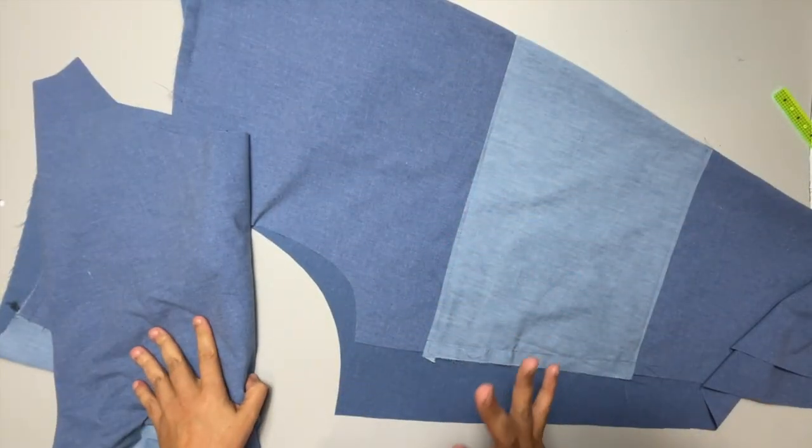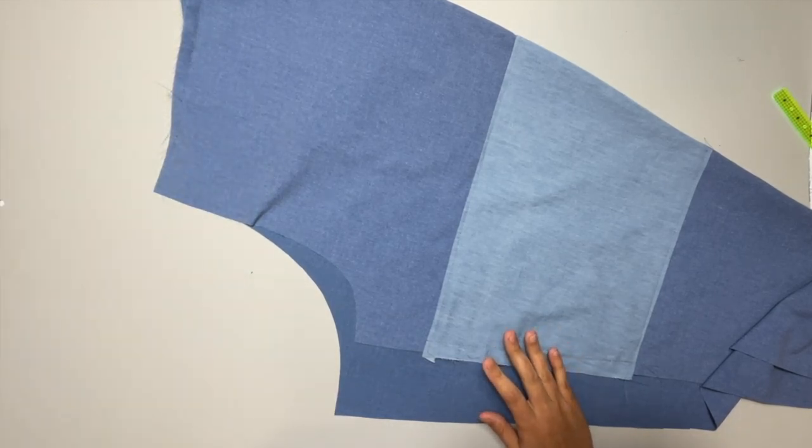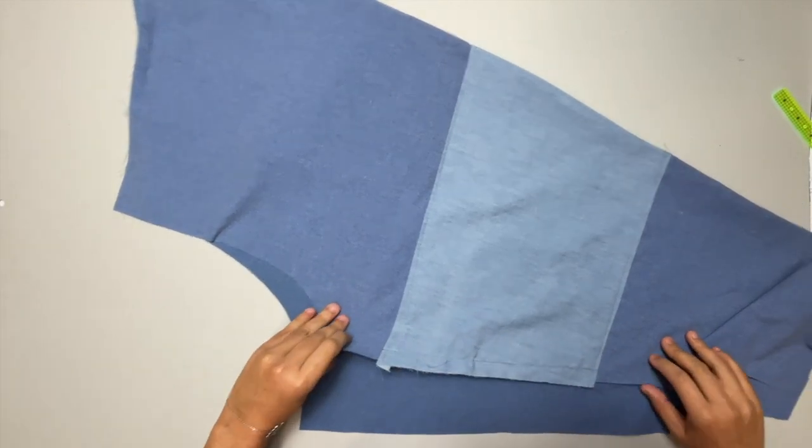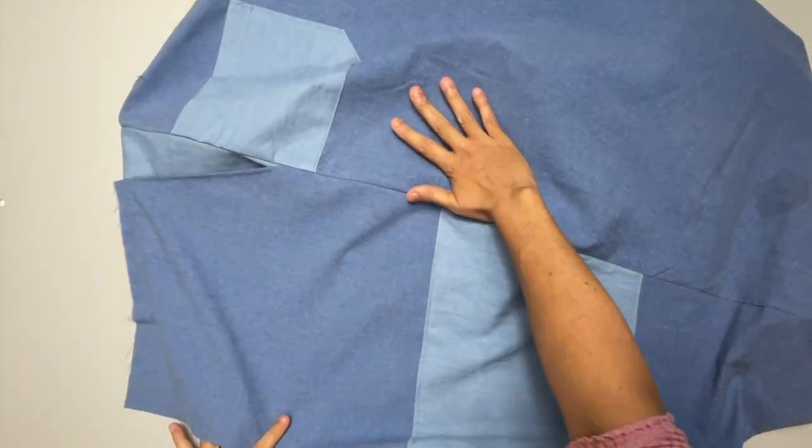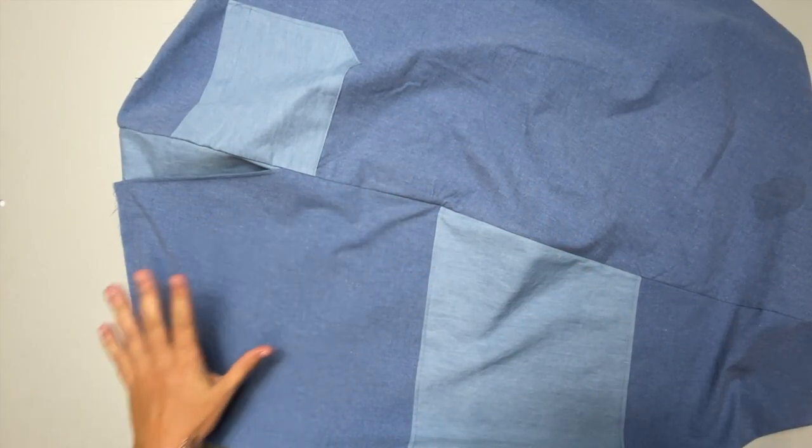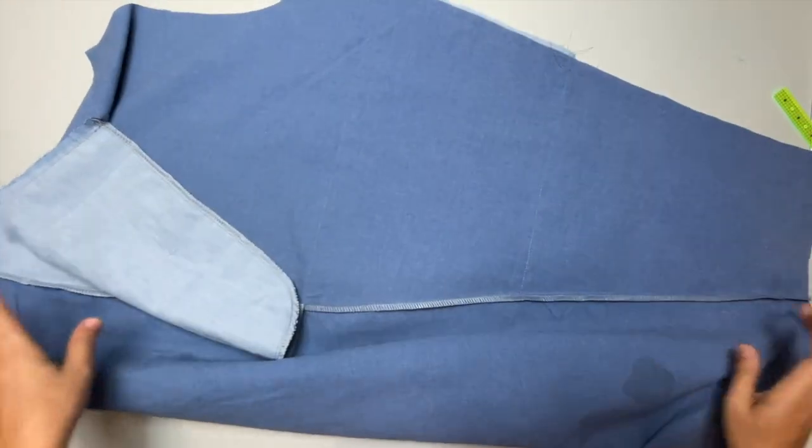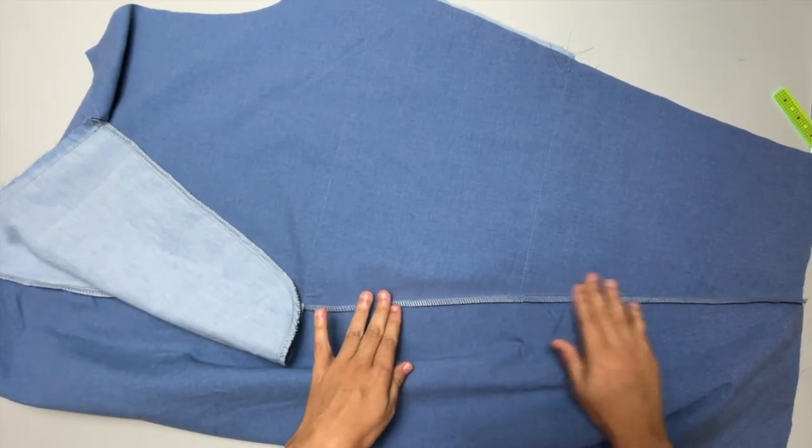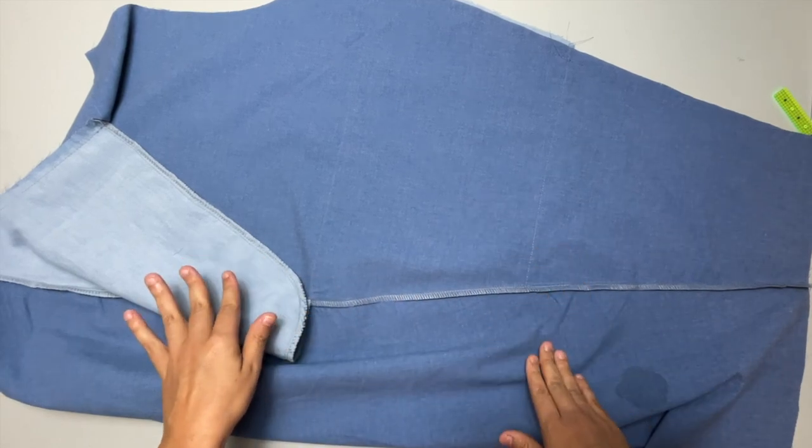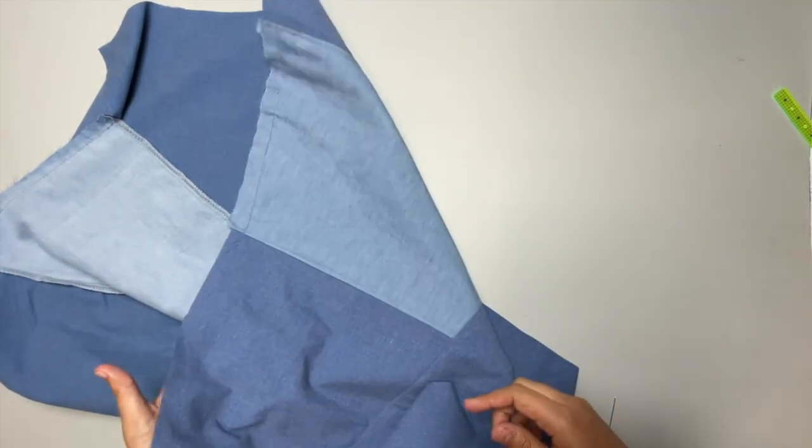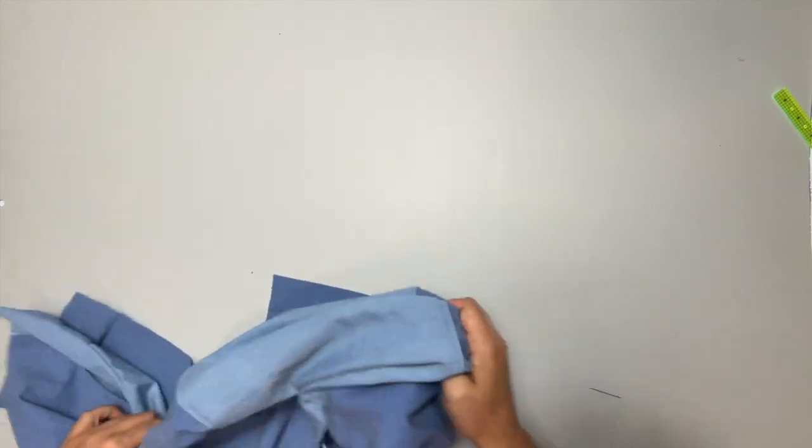All right, so let's attach this cargo pocket. We've got to prep it first and then we're going to actually attach it over. It's going to go over the side seam. So if you did not press your seams open and you did it like me, where you serge and you press to one side, make sure you press to the back. Okay, so cargo pocket, let's do it.